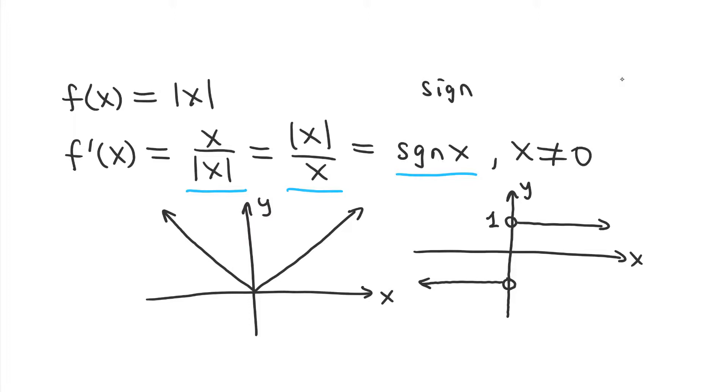The sign function, or the signum function, basically gives you the sign of a number. You put in a number, and it gives you the sign of that number, meaning positive or negative. Is it sign positive, or is it sign negative? And so it looks something like this.